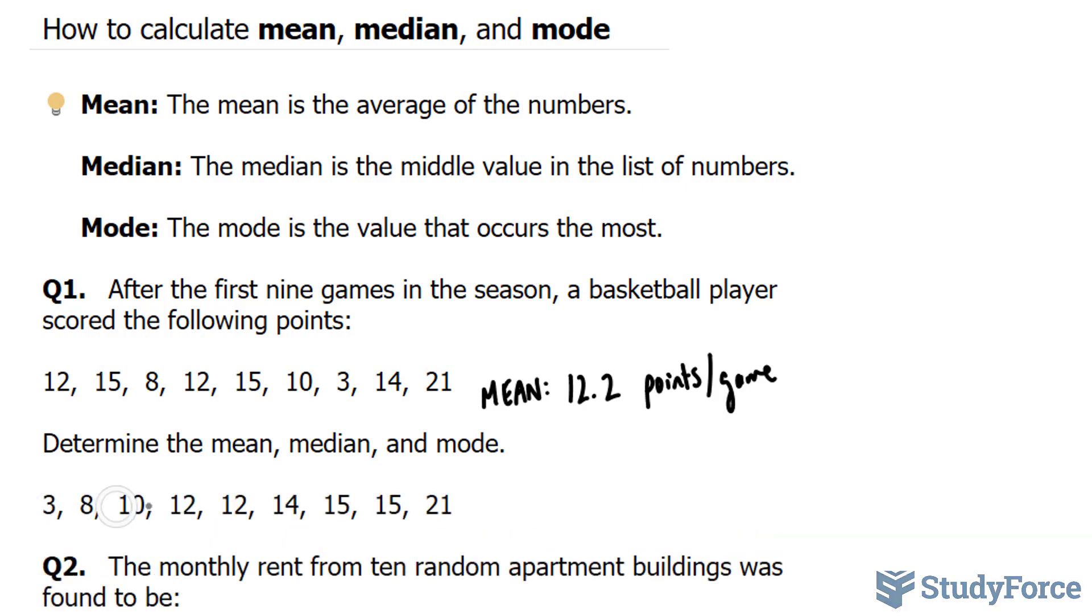Now that I've ordered my numbers from least to greatest, to find the number that is in the middle, you take the total number of numbers, which is 9, add 1 to it, and divide by 2. And this gives you 10 over 2, and the middle number is 5.